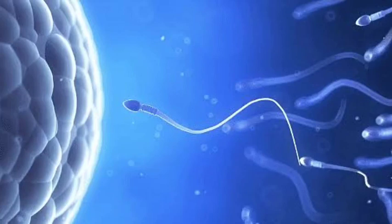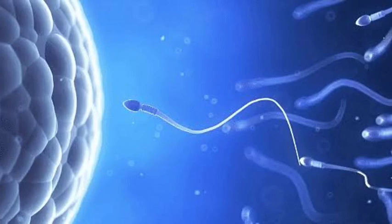The pyramidal system controls fine and skilled voluntary motor activity. It is comprised of the corticonuclear tract, which passes through the genu of the internal capsule, and the corticospinal tract, which passes through the posterior limb of the internal capsule. The extrapyramidal system plans and programs voluntary motor activity before it is executed by the pyramidal system.